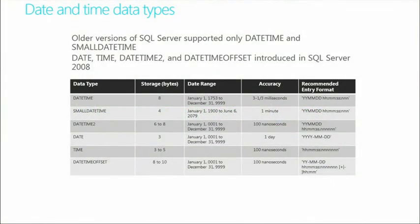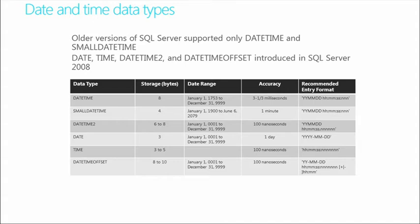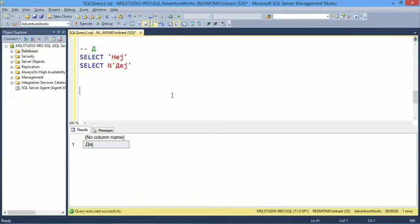For date and time, older versions supported DateTime and SmallDateTime. SQL Server 2008 introduced Date, Time, DateTime2, and DateTimeOffset. These provide more flexibility for storing just a date or just a time, and offer improved precision and storage efficiency — DateTime2 uses 6 to 8 bytes versus the old DateTime's 8 bytes.